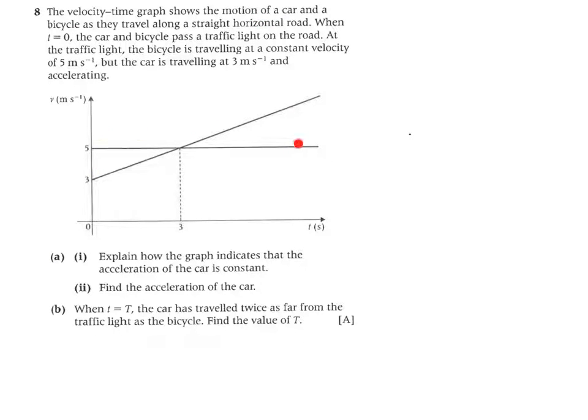We have two separate motions as they travel along a straight horizontal road. When t is zero, the car and bicycle pass a traffic light on the road. At the traffic light, the bicycle is traveling at a constant velocity of 5 meters per second. I'm going to have a look at my graph already. So constant velocity means there's no acceleration. We're looking at the horizontal line indeed with a gradient of zero, no acceleration, 5 meters per second. So that will be the bike.